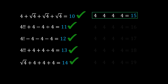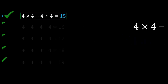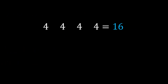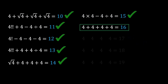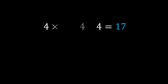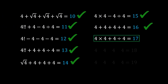Number 15: 4 × 4 − 4 ÷ 4 = 16 − 1 = 15. Number 16 is by far the easiest — just add all four fours together: 4 + 4 + 4 + 4 = 16. Number 17: 4 × 4 + 4 ÷ 4 = 16 + 1 = 17.